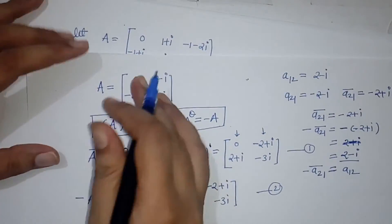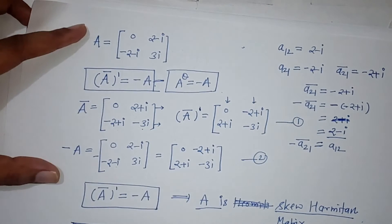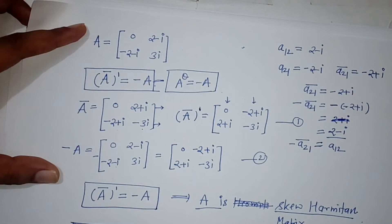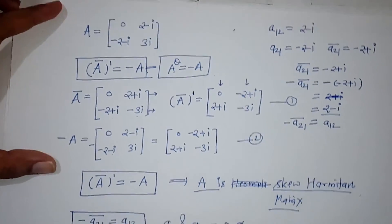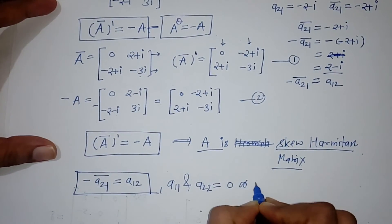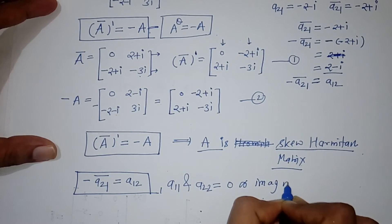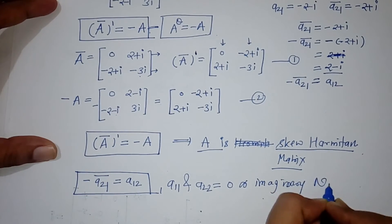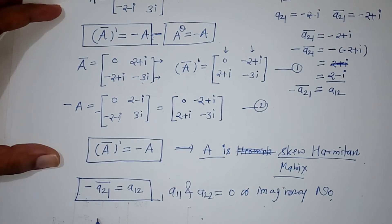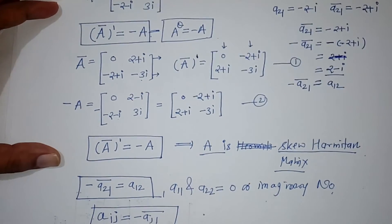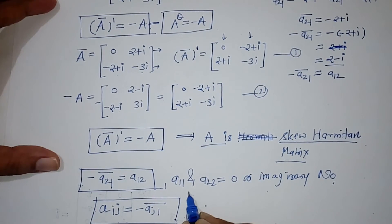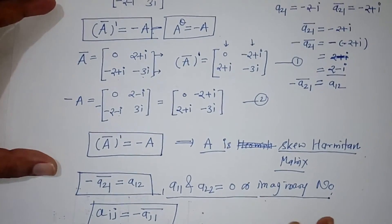So A11 and A22 are both 0, satisfying the diagonal condition. The condition Aij equals minus Aji-bar is satisfied, and diagonal elements are zero or imaginary. All skew Hermitian conditions are verified for this matrix.